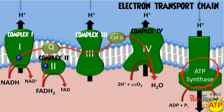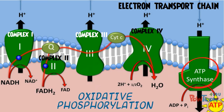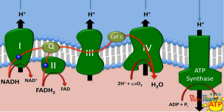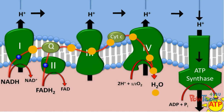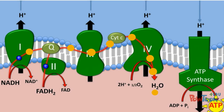The majority of energy is produced at the cellular level, which happens in a particular phase of aerobic respiration called oxidative phosphorylation, located in the ETC of the mitochondria. Oxygen facilitates the movement of electrons across the chain, allowing hydrogen ions from complexes 1, 3, and 4 to pass through the ATP synthase, finally forming ATP, or cellular energy.